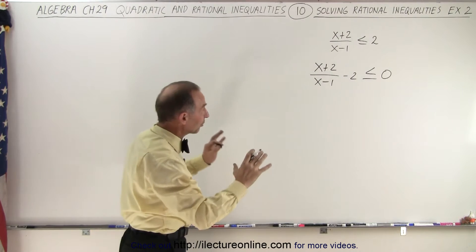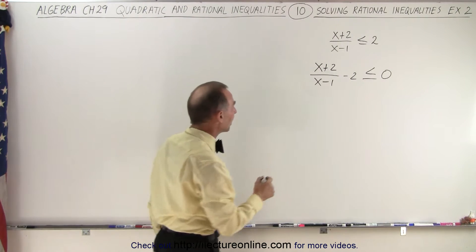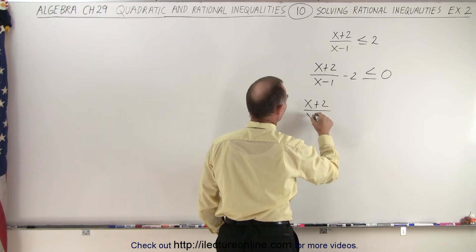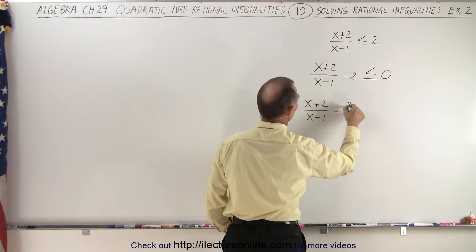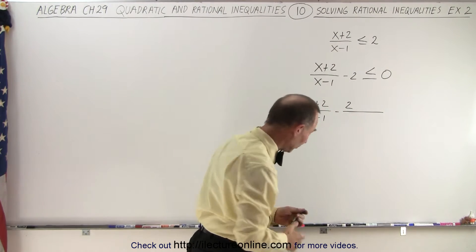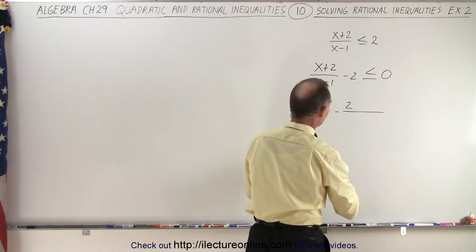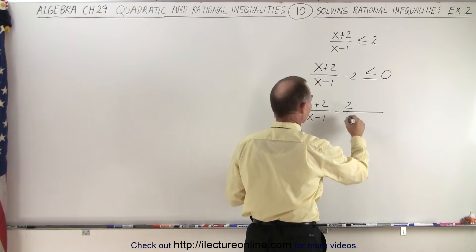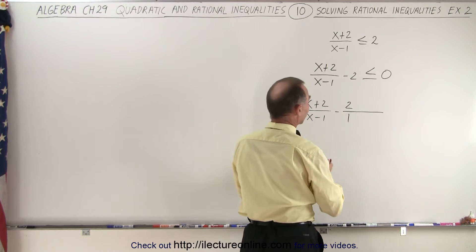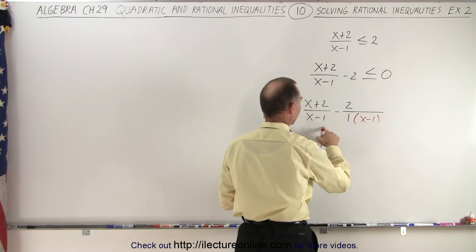Now we need to write that into a single rational expression, so we need to find a common denominator. So we have x plus two over x minus one, minus two over — and we're going to multiply the denominator, which is one, times the same denominator as the fraction on the left, x minus one.